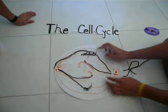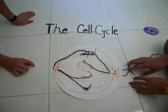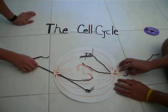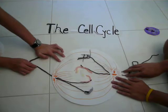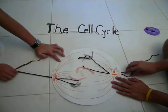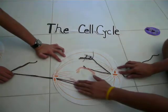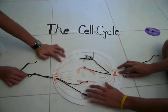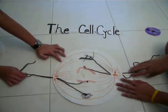During the second stage of mitosis, the chromosomes line up in the middle. This phase is called metaphase.